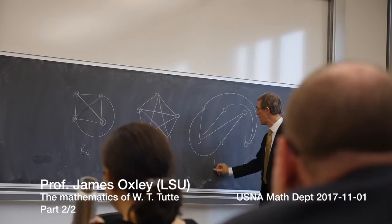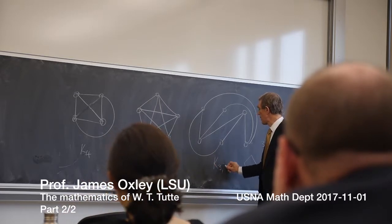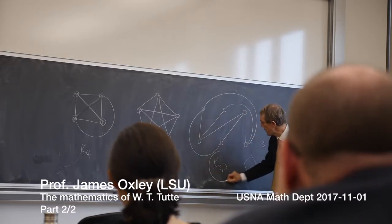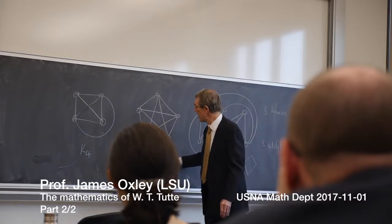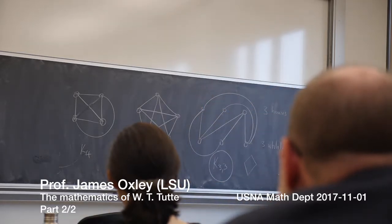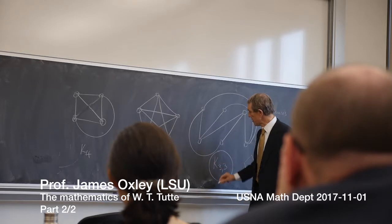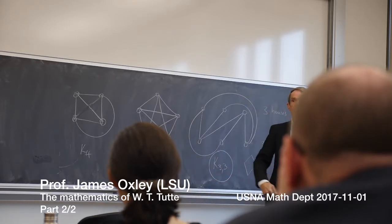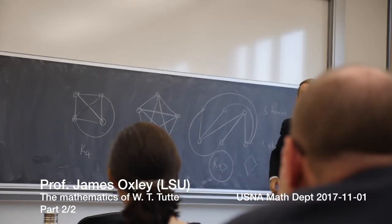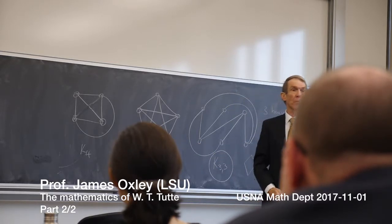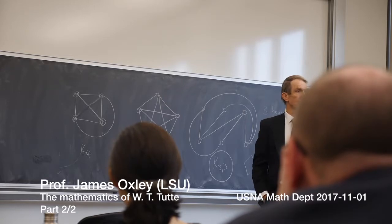Now these two guys, this is called K33 because it's got two parts at the top and the bottom, three vertices in each. This graph and this graph are the obstructions to being planar. And that's Kuratowski's theorem that was mentioned before.